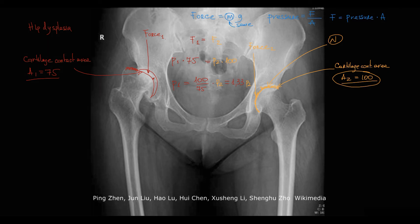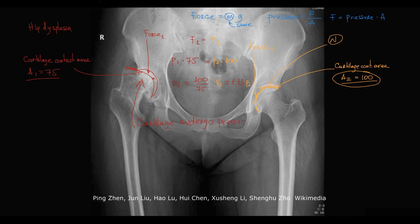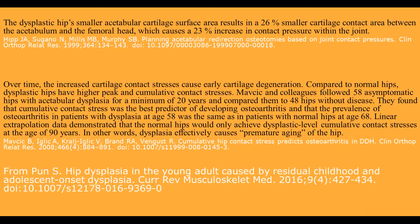So in a joint with hip dysplasia, cartilage undergoes pressure load 1.33 times higher than in a normal joint — approximately a 25% increase in contact pressure. In accurate studies, a 26% smaller cartilage contact area between the acetabulum and femoral head caused a 23% increase in contact pressure. Over time, this increased stress caused early cartilage degeneration. It was found that cumulative contact stress is the best predictor of osteoarthritis, and the prevalence of OA in 58-year-old patients with hip dysplasia equaled that in 68-year-old patients with normal hips — demonstrating premature joint aging.